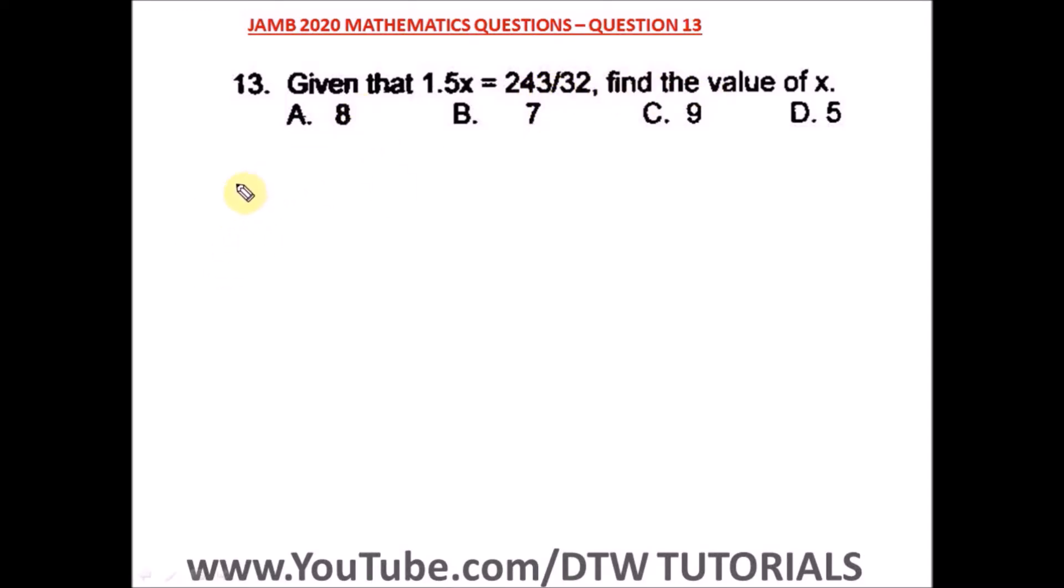This is the same thing as 15 over 10 times x equals 243 over 32. If you cross multiply, you have x equals 243 times 10 over 32 times 15.